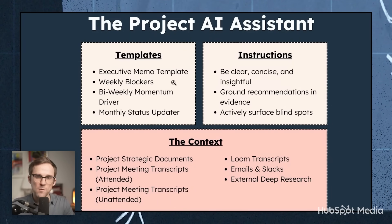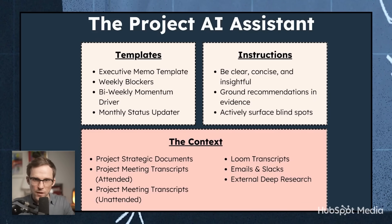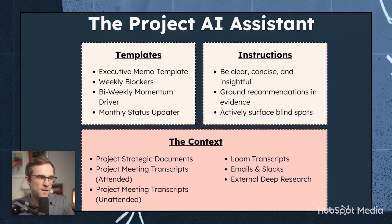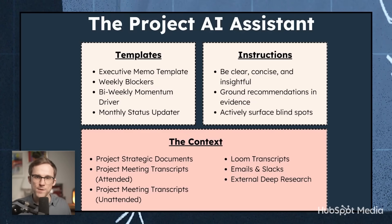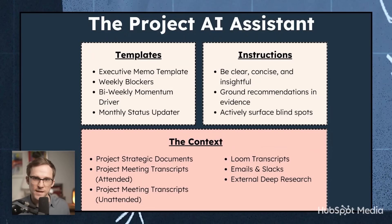I put templates in the same project files — they're not building context about the project itself, but you upload them in the same place. If you upload templates, I can just say, 'Create a memo for this using the template I gave you.' Weekly blockers: every single thing that slows down that project should be solved within that week. At the start of every week, I ask it to show me the blockers across my projects. The biweekly momentum driver is basically a way to show what we shipped every two weeks, anything we said we'd do that we didn't, and what we'll ship the next two weeks — and that is templatized, so whenever I ask for that update, it knows exactly how to give it to me.